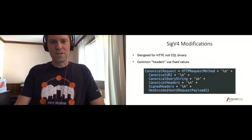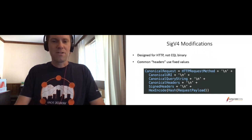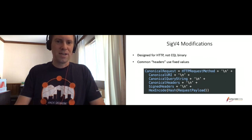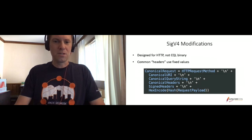SIG V4 was designed primarily for HTTP, so it has things like request methods, URIs, query strings, and headers. But Cassandra uses the CQL binary protocol for client communication, and these aren't all applicable. So what we've done is taken SIG V4 and where we can, we use fixed values for those things such as the request method or the URI. The signature is still dependent on things like the timestamp and the actual secrets on either side, so this is still considered secure.